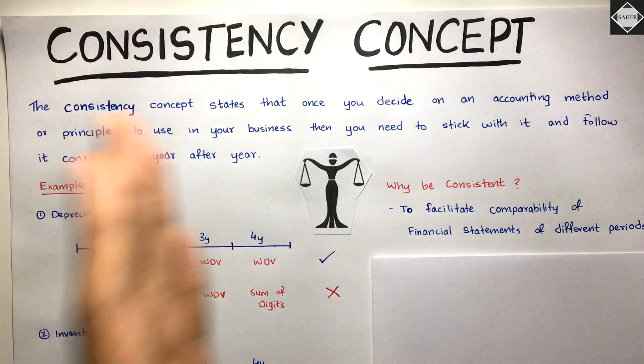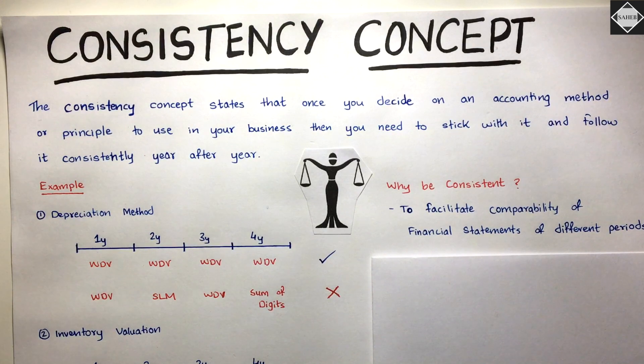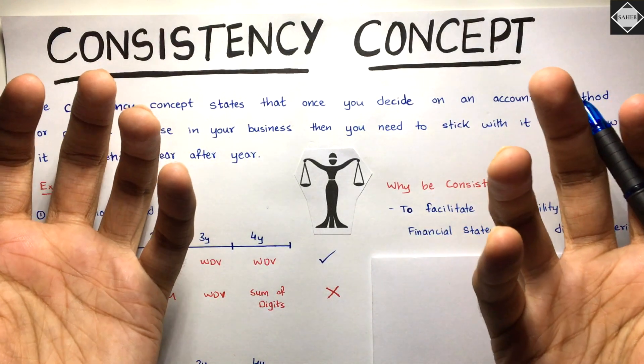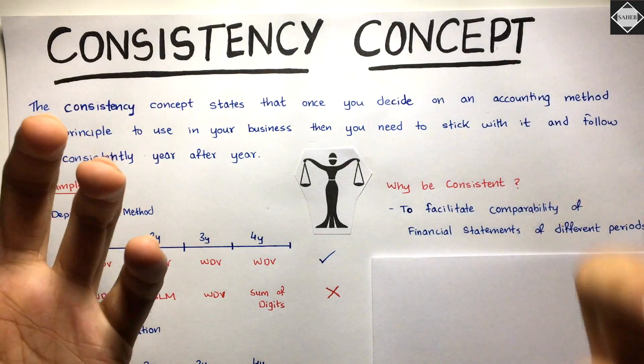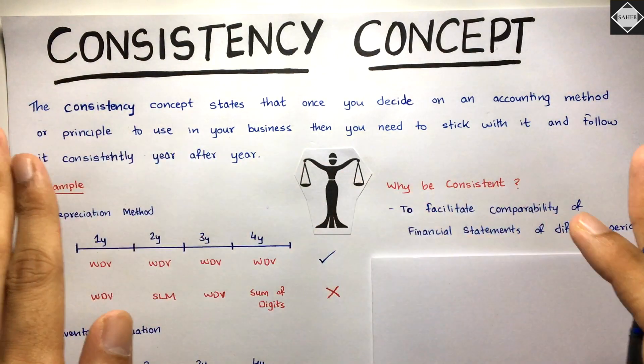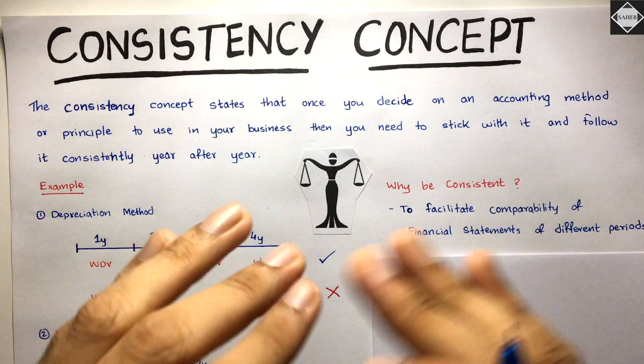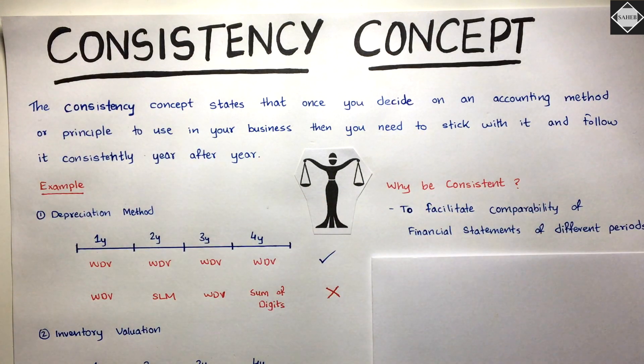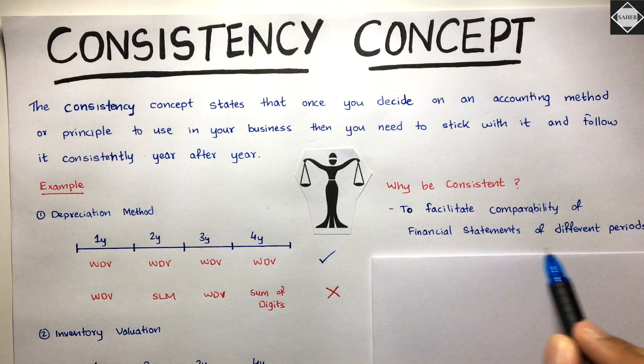What does the consistency concept say? It says you have to use the same accounting policies year after year - then only it will be comparable. You cannot compare apples with oranges. You can't compare a class 8 student with a class 12 student. It has to be on the same level. In the accounting world, the same level means the policies should be uniform and the same to facilitate comparability of financial statements of different periods.